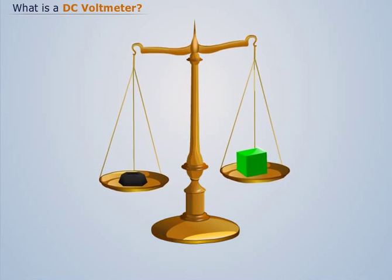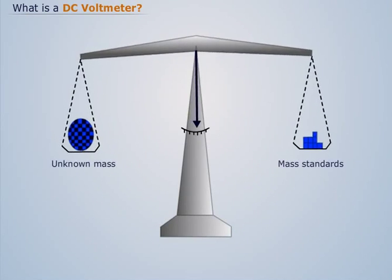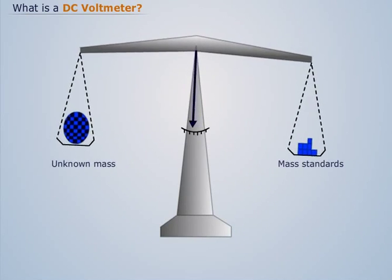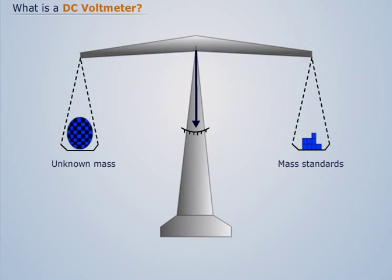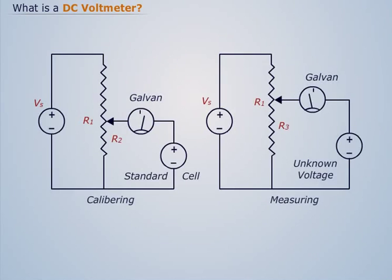A beam balance does not actually weigh anything. Rather, it indicates equality between the unknown mass and the pile of calibrated masses. Similarly, any instrument can be calibrated by comparing its reading with that of a more accurate instrument when both are measuring the same quantity.